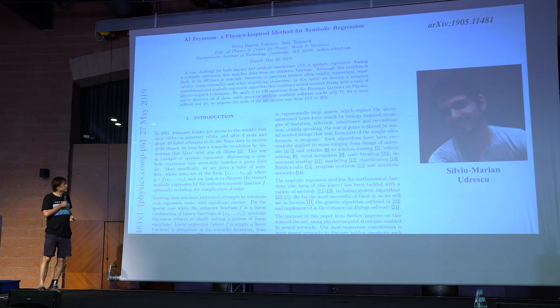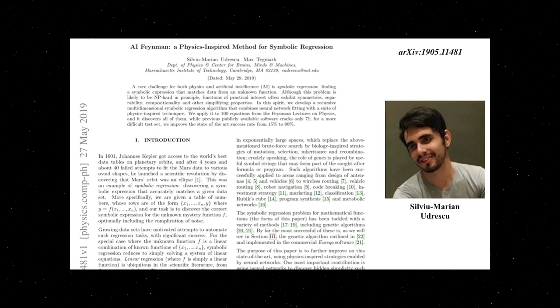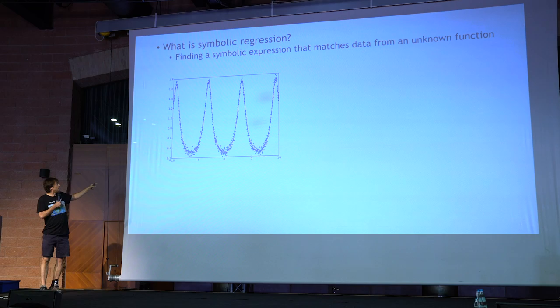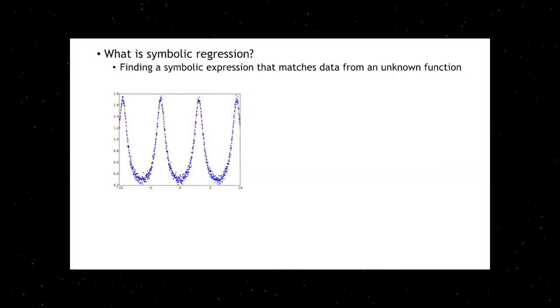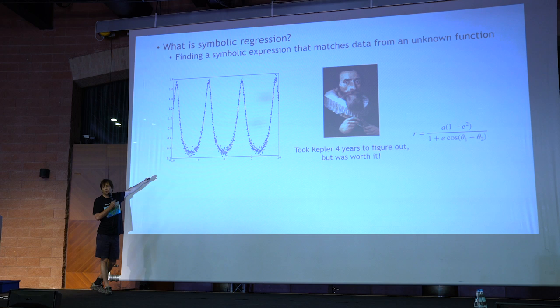Then we did this other project spearheaded by my grad student Silvio Mariano-Drescu where we took harder physics problems. We took the Feynman lectures of physics and pulled out the hundred equations that were the most famous or complicated ones. For example, problems like this: you're given a time series of data and asked what function is this. This is known as symbolic regression. Linear regression is if it's a linear function of many variables; here it could be any old function. Kepler worked on this one for four years and came up with the ellipse formula.